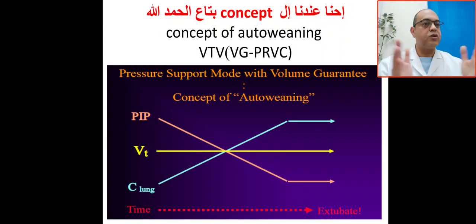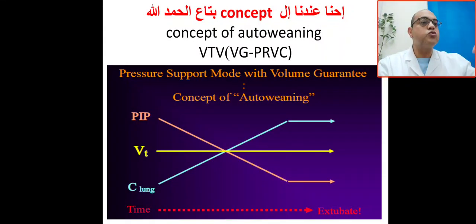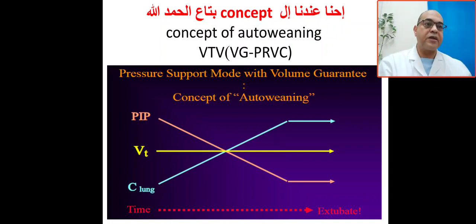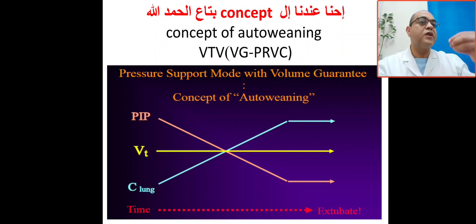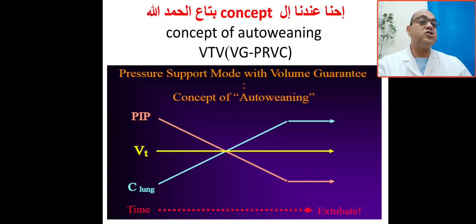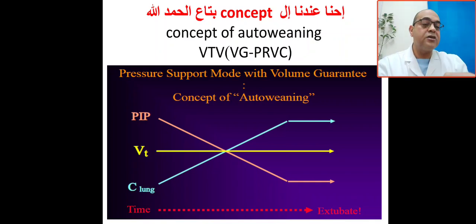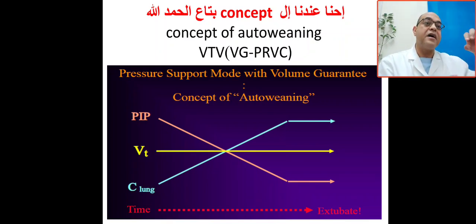Bismillah ar-Rahman ar-Rahim. Today we are going to talk about the concept of auto-weaning in volume target ventilation — in VG (volume guarantee) and PRVC (pressure regulated volume control). You can add VG to pressure support mode, and you can add VG to assist control or AC mode.